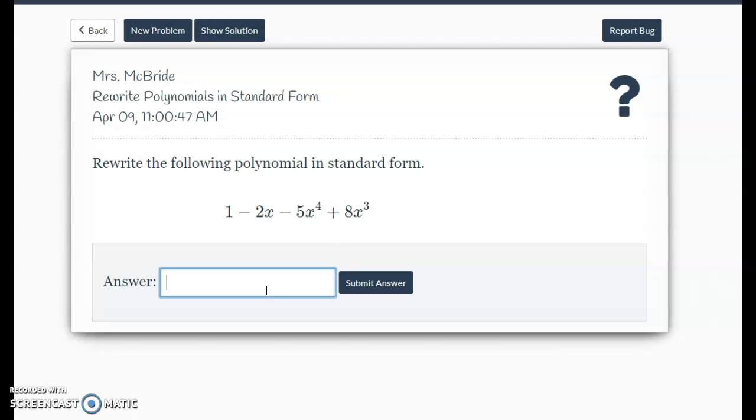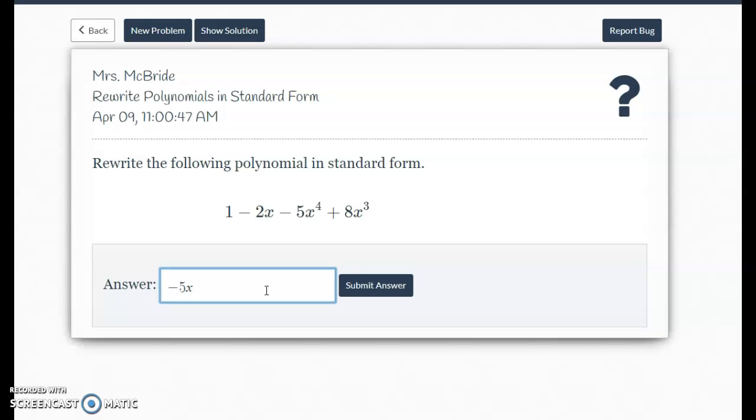So you're going to take negative five x, to get it to raise to the fourth power, you're going to hit the shift and the carat key or the number six key on your keyboard. And then it will take it up to an exponent. Then if you hit the space bar, it brings it back down. The plus eight x, I'm going to hit shift and that six key again to take it to an exponent. Type in the cube, minus two x plus one.